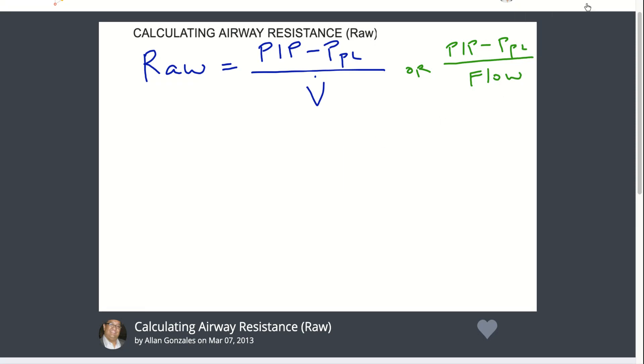Calculating airway resistance, or Raw, requires the PIP minus plateau over the V dot or the flow. The unit of measurements for airway resistance is from the numerator, your centimeters of water pressure over liters per second.